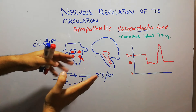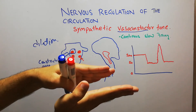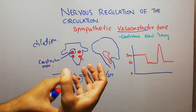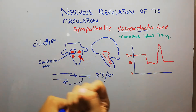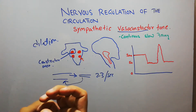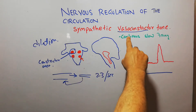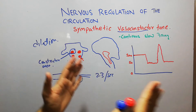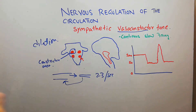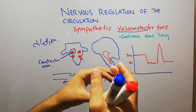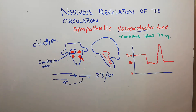The sympathetic vasoconstrictor tone refers to the continuous slow firing of the vasoconstrictor area of the vasomotor center, which helps maintain the tone of the blood vessels. Blood vessels remain slightly constricted. When this center is activated, constriction increases significantly, but normally a slight vasoconstriction is present due to the continuous transmission of a few impulses every second, maintaining slight constriction all the time.